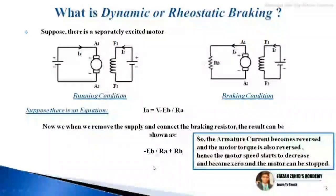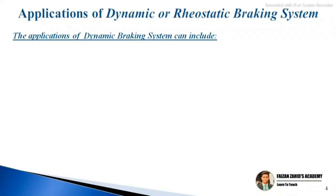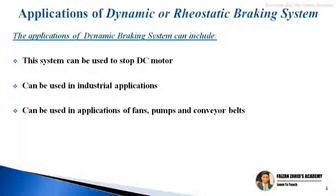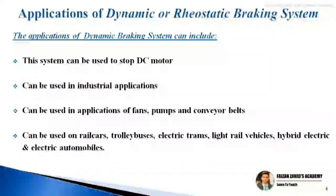The applications of the dynamic braking system include: it can be used to stop DC motors, in industrial applications, in applications of fans, pumps, and conveyor belts, and it can be used on rail cars, trolley buses, electric trams, light rail vehicles, hybrid electric, and electric automobiles.